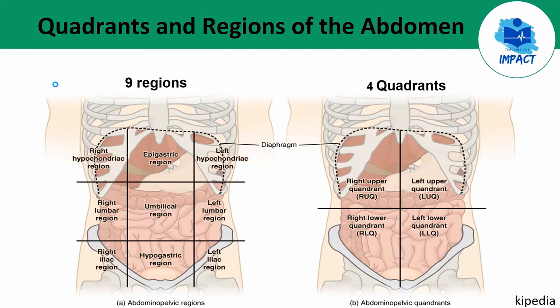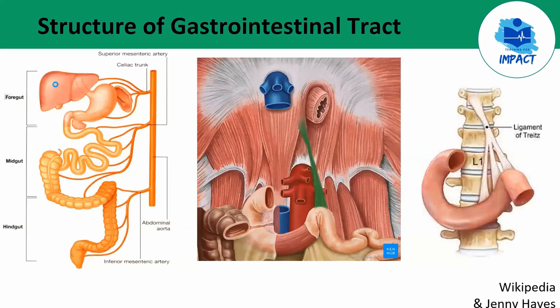Now let's go through some high yield but basic anatomy. The GIT is nine meters long, starting from your mouth all the way to your anal canal. The GIT can be split into foregut, midgut, and hindgut. Remember that the three branches coming off the front of the abdominal aorta are the celiac trunk, the superior mesenteric artery, and the inferior mesenteric artery. The foregut consists of structures from the distal end of your esophagus all the way down to the proximal duodenum, including the liver, gallbladder, pancreas, and spleen — supplied by the celiac trunk. The midgut starts from the distal duodenum to the proximal two-thirds of the transverse colon, supplied by the superior mesenteric artery. The hindgut starts from the distal one-third of the transverse colon all the way down to the rectum, supplied by the inferior mesenteric artery.